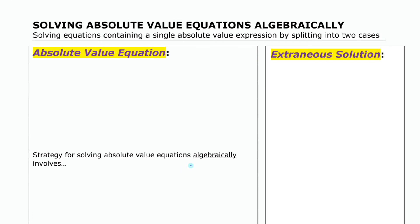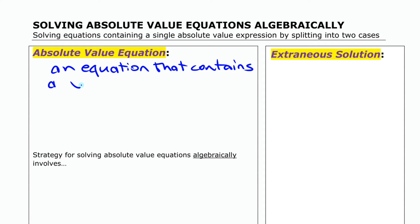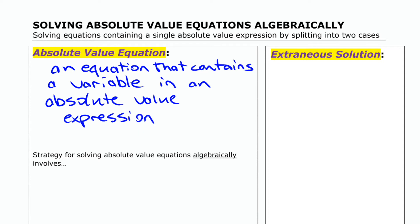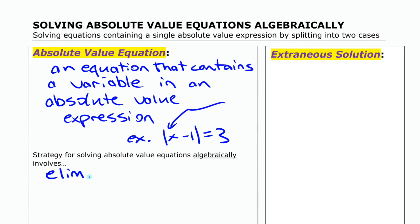Looking at solving absolute value equations: an absolute value equation is an equation that contains a variable in an absolute value expression. For example, absolute value of x minus 1 equals 3 — variable inside an absolute value expression. Our strategy for solving equations like that is going to be to eliminate the absolute value expression by considering separate cases.